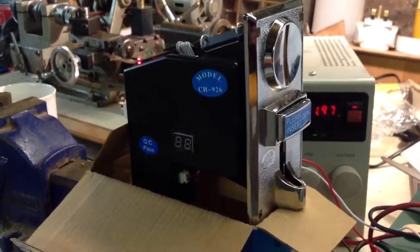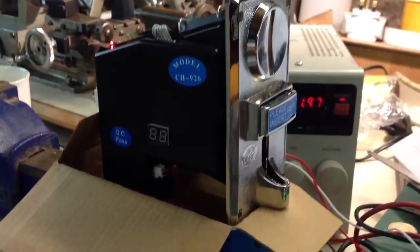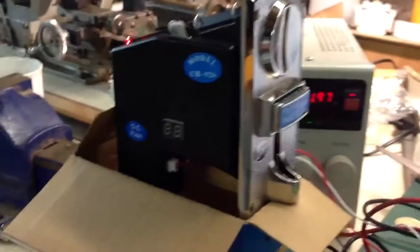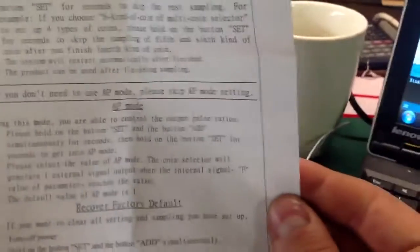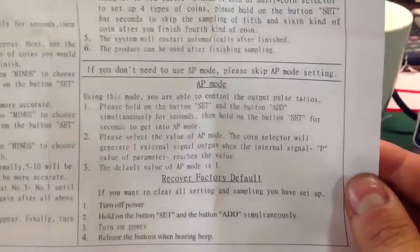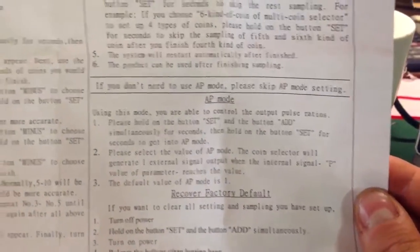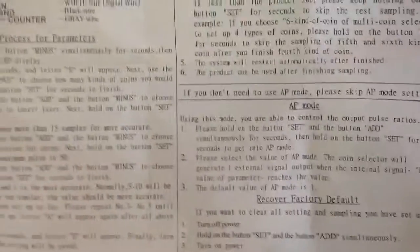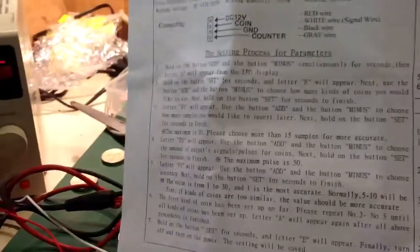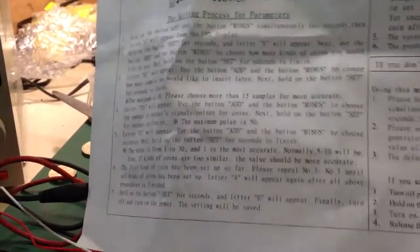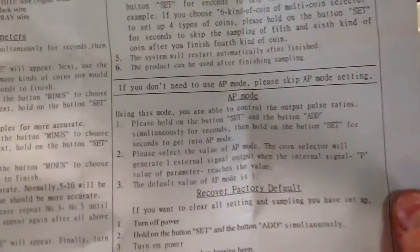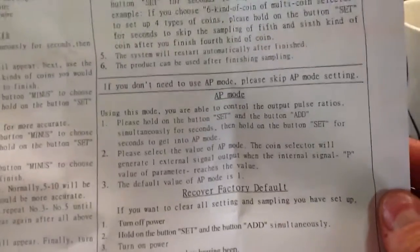I've been having a few problems with this and I've now managed to fix it. The problem was the AP settings — AP mode. I must admit I struggled setting this up at the start, so I'm guessing that I've probably messed up the AP functions right at the start. Anyway, I've set that back to 1 now and the coin accepter is working.